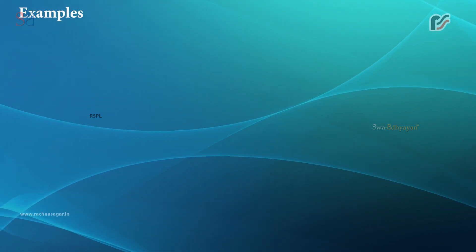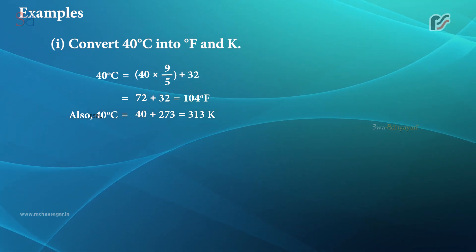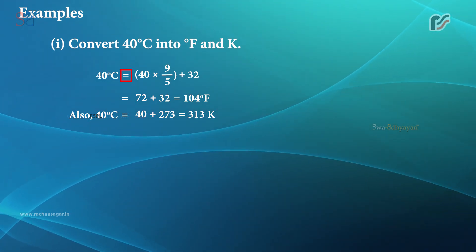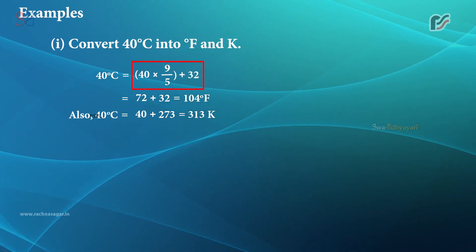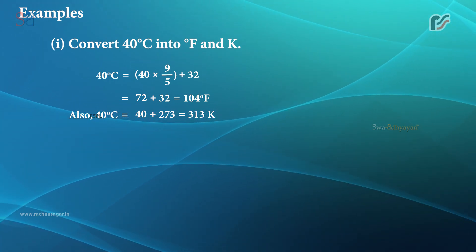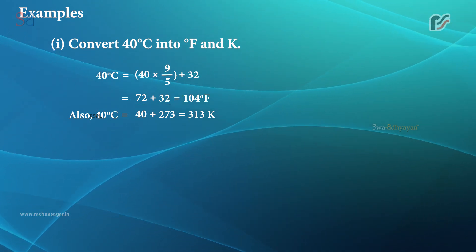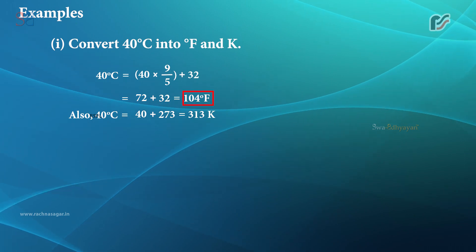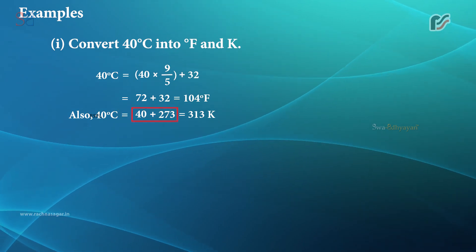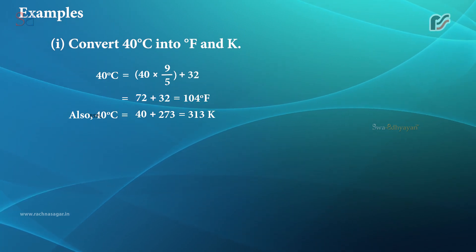Example 1: Convert 40 degree Celsius into degree Fahrenheit and Kelvin. 40°C = (40 × 9/5) + 32 = 72 + 32 = 104 degree Fahrenheit. Also, 40°C = 40 + 273 = 313 Kelvin.